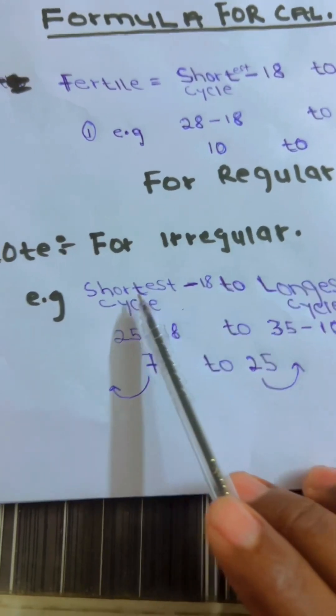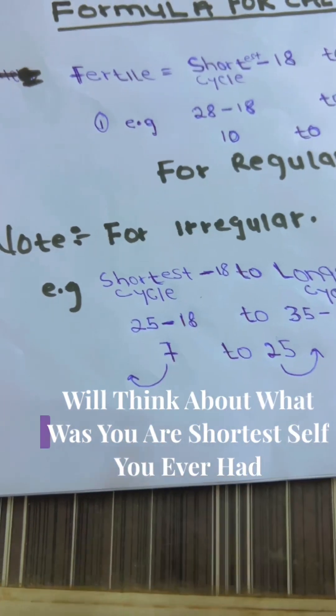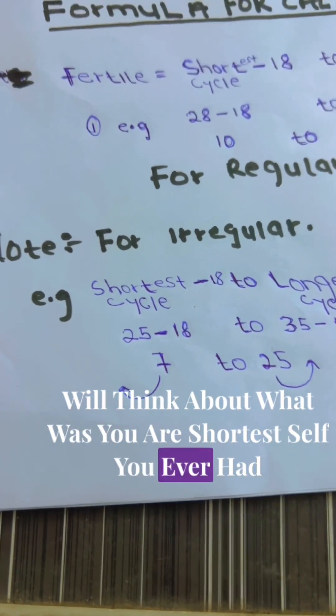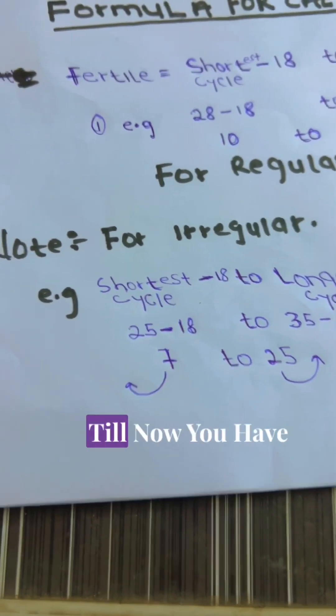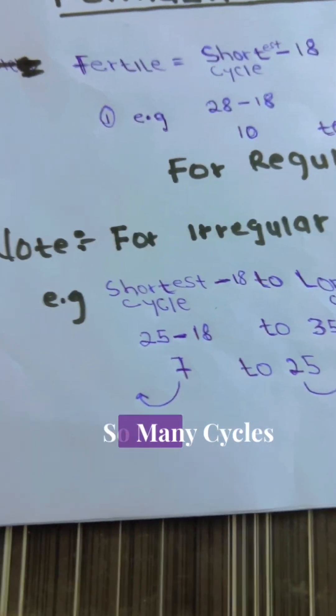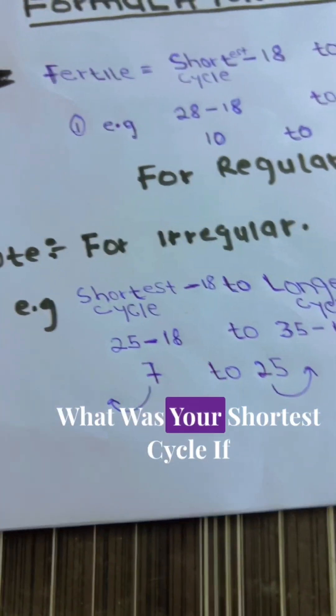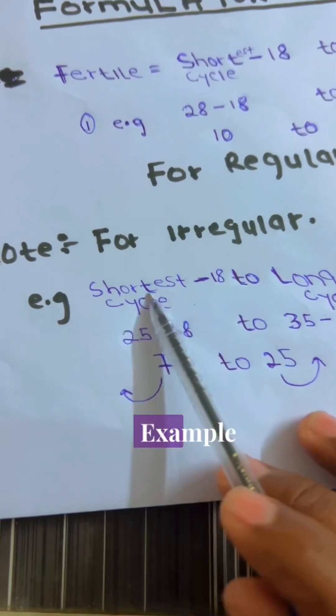So in that case, what you will do, you will think about what was your shortest cycle you ever had. Till now, you have so many cycles. So, what was your shortest cycle? If you think about that, for example,